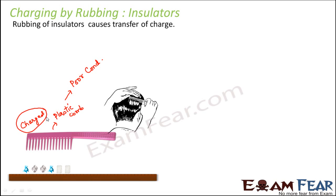Once the comb gets electrically charged and you bring it near small bits of paper which are neutral, these bits of paper tend to get attracted towards the comb. That is how we see that insulators can get charged by simple rubbing, because during rubbing there is transfer of charge. If the object is receiving extra electrons it will become negatively charged; if it is losing electrons it will become positively charged.